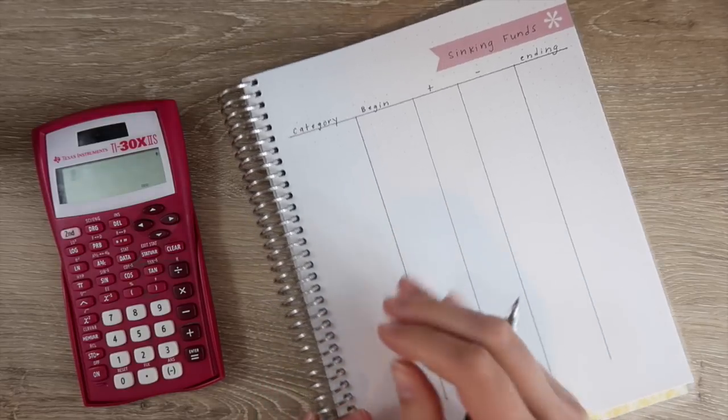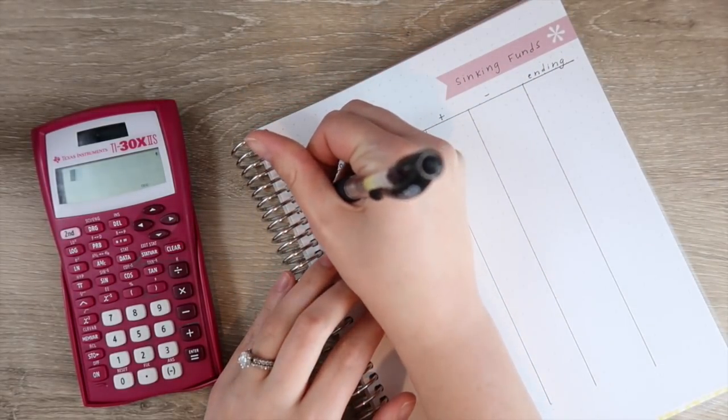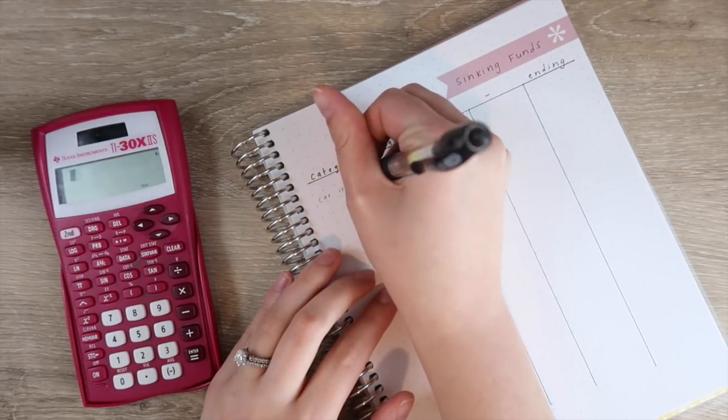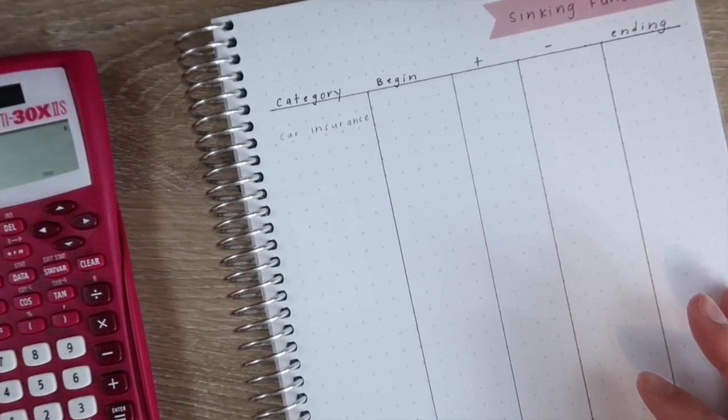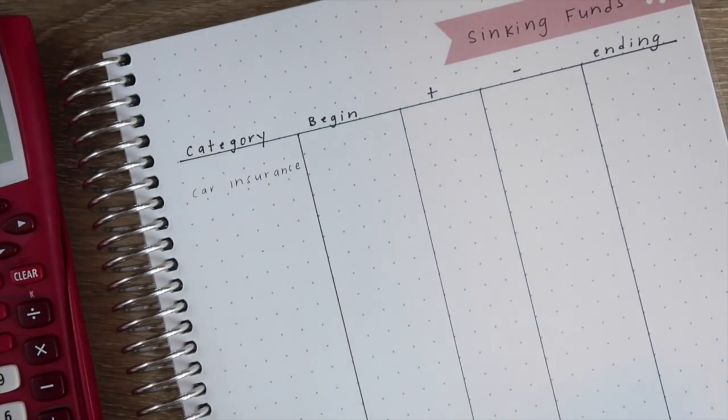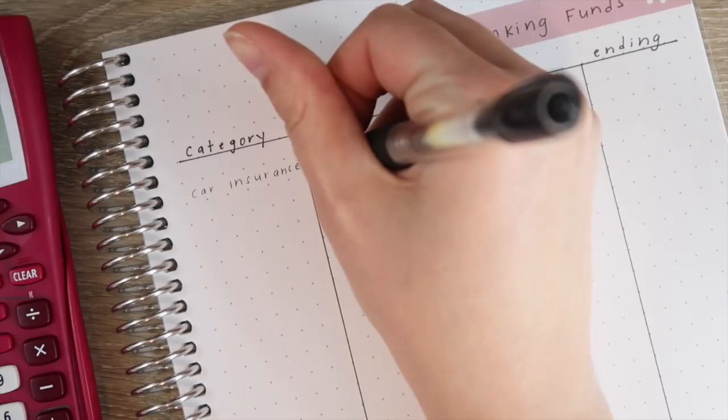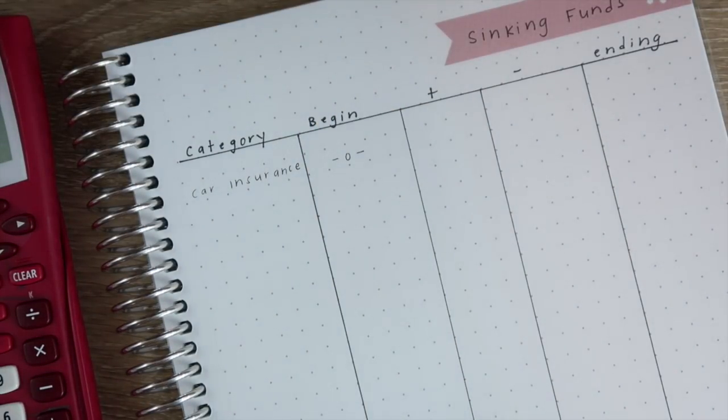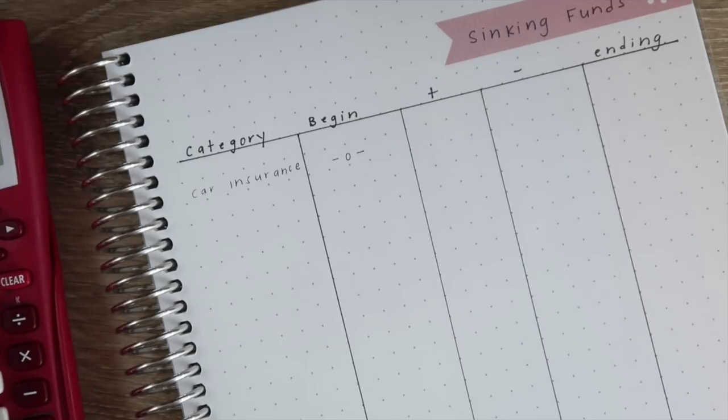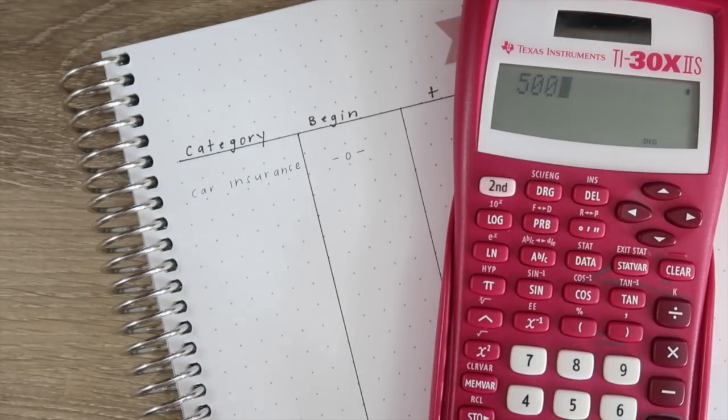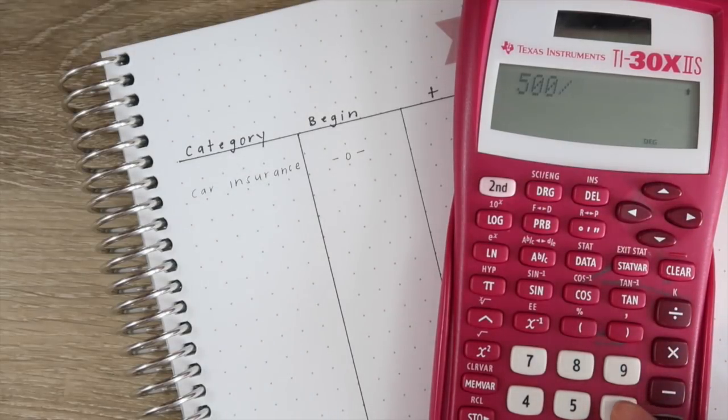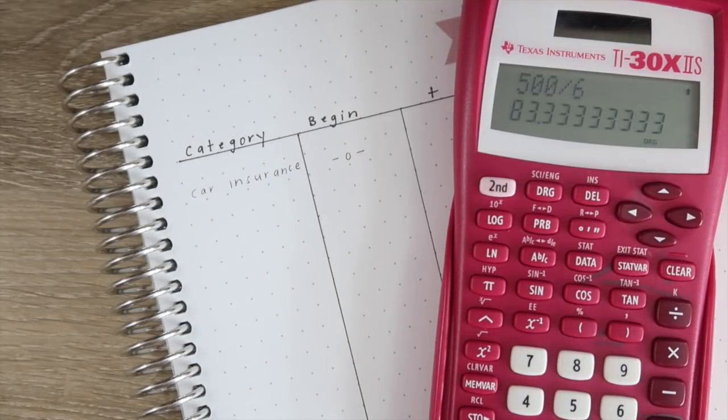One category that we have for our sinking funds is car insurance and I think that's a good place to start. Most people have car insurance. It's definitely something that a lot of people can relate to. So let's say you're starting off this month with sinking funds and your beginning balance of course is zero. Now for your car insurance you pay it every six months because doing so gives you a discount. So let's say you have one car and your car insurance is $500 per every six months. You take the full $500 divided by 6 and that gets you $83.33.